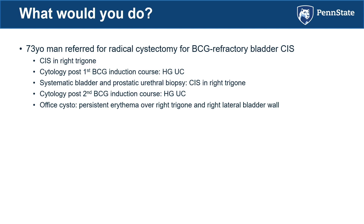Another case: a 73-year-old man referred for radical cystectomy for BCG-refractory bladder CIS in the right trigone. He completed induction BCG — cytology returned high-grade urothelial carcinoma. Systematic bladder biopsy and prostatic urethral biopsy showed CIS only in the right trigone. A second induction BCG course again yielded high-grade cytology. Office cystoscopy showed persistent erythema over the right trigone and lateral bladder wall. I asked the audience: how many would take this patient for radical cystectomy now? About half. The other half would do something else — one audience member said evaluate the upper tracts first. Absolutely correct.